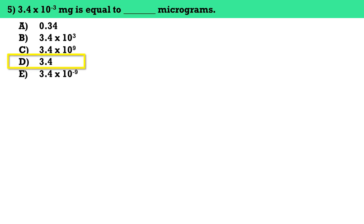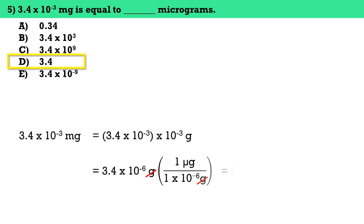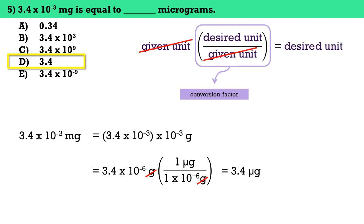Number five, 3.4 times 10 to the negative 3 milligrams is equal to blank micrograms. The answer here is letter D, 3.4. If we substitute 10 to the negative 3 for the prefix milli, 3.4 times 10 to the negative 3 milligrams becomes 3.4 times 10 to the negative 6 grams. We can now use dimensional analysis to convert grams to micrograms. The conversion factor needed is 1 microgram equals 1 times 10 to the negative 6 grams. Because the unit gram is at the top, we write 1 times 10 to the negative 6 grams in the denominator to cancel out grams, and 1 microgram in the numerator. The answer is 3.4 micrograms.